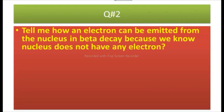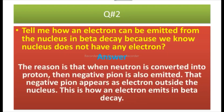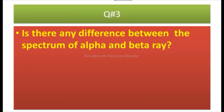Because we know the nucleus doesn't have any electron. Answer: The reason is that when a neutron is converted into a proton, a negative pion is also emitted. That negative pion appears as an electron outside the nucleus. This is how an electron is emitted in beta decay.